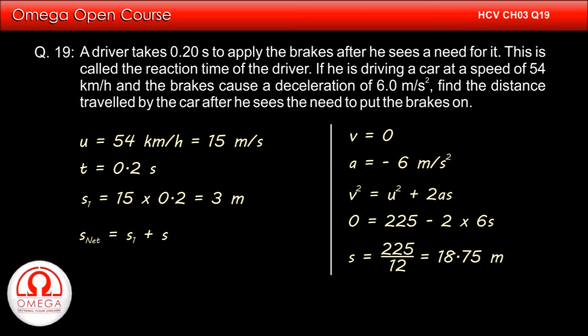Now, the total distance travelled by car is equal to sum of these two displacements which is equal to 21.75 meters. Since all the data in question is given in two significant figures, the answer must also be in two significant figures. Rounding 21.75 to two significant figures, we get 22 meters. This is our answer.